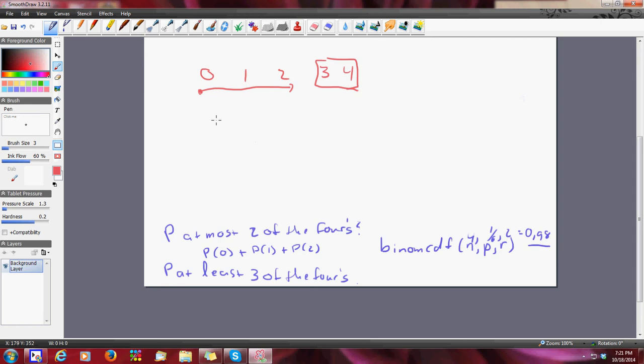So, what I'm going to do is, I recognize that there's 100%, which is one, so I'm going to do one minus the binomial CDF of four trials at the probability of one sixth, up to two.